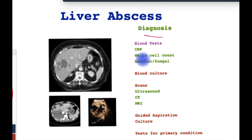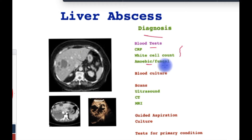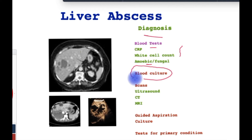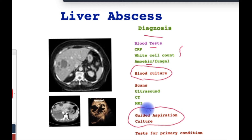The diagnosis of liver abscesses is usually dependent on scans in patients with symptoms. However, blood tests are useful — inflammatory markers such as CRP and white cell count are elevated, and serological tests for amoebiasis and fungal infections may be useful where these conditions are suspected. One of the most useful tests is a blood culture when the patient has a high temperature, which will isolate the bacteria and direct antibiotic therapy. Guided needle insertion and aspiration of pus from the liver is another invaluable test to grow the bacteria in the lab and identify which type it is, which may also give a clue to the origin or cause.